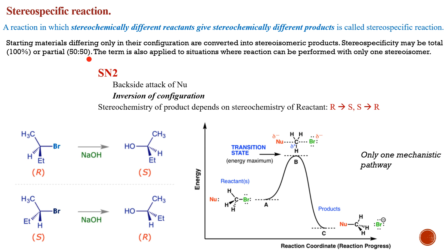For example, SN2 reaction — it is a one-step reaction where bond formation and bond breaking take place simultaneously. The nucleophile attacks from the back side of the leaving group. So depending upon the position of the leaving group, you get a particular product. For R configuration, because the attack is from the back side, there is 100% inversion and you get S configuration. If it is S, you will get R.